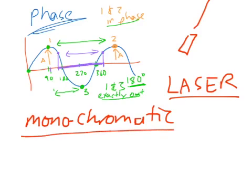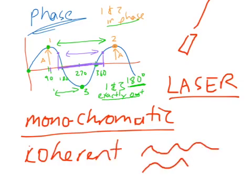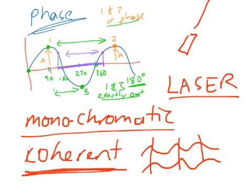So it's monochromatic. One colour is also in-phase, or coherent is what we would call it. Coherent. That means all of those waves are lining up together, and they're in-phase with each other. So the peaks are all at the same time peaking. I haven't drawn this too well.